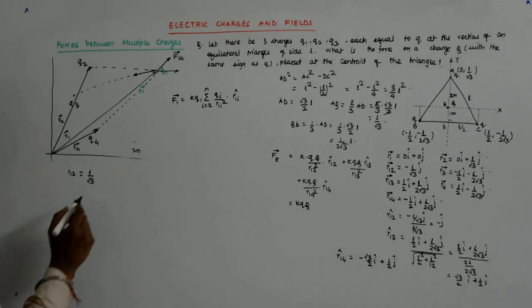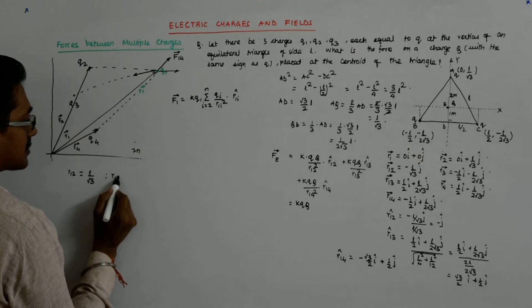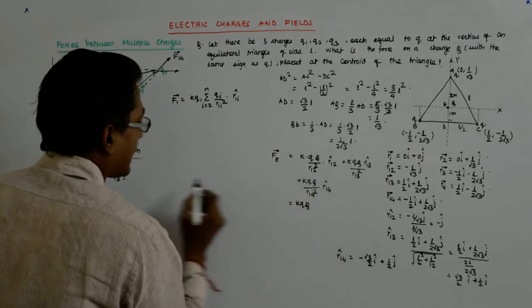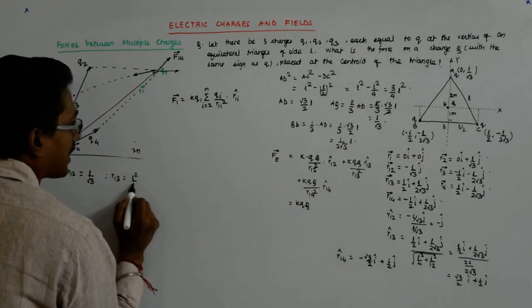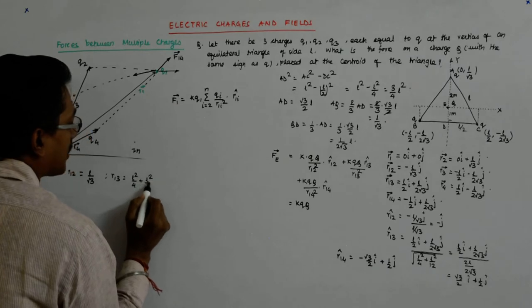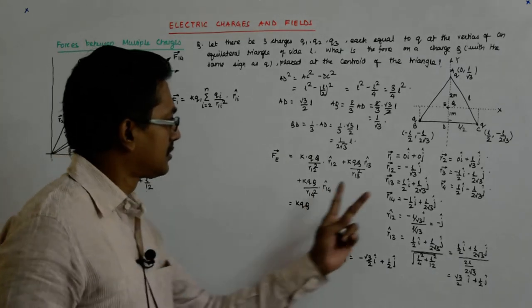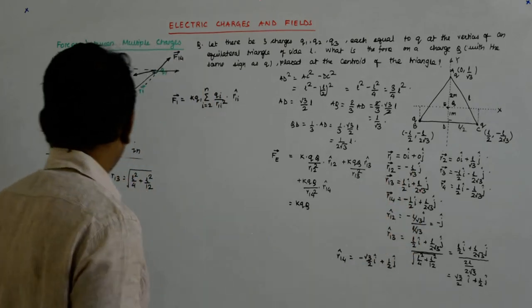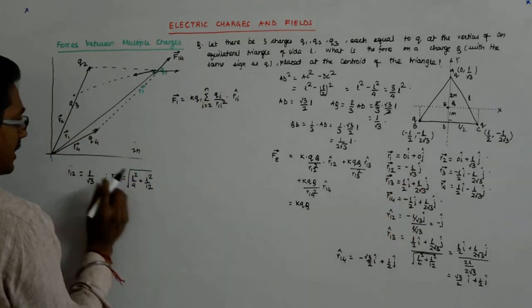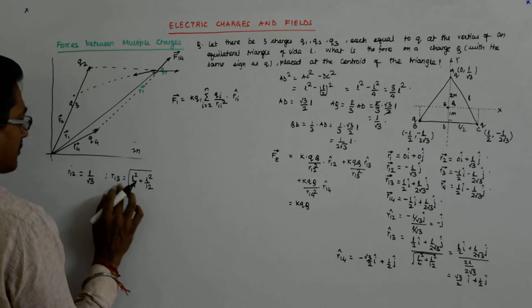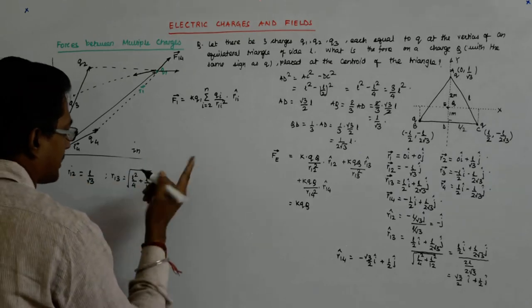What is R13? That is L square by 4 plus L square by 12 root over, is it not? Or, why do that? Fine, we will see.